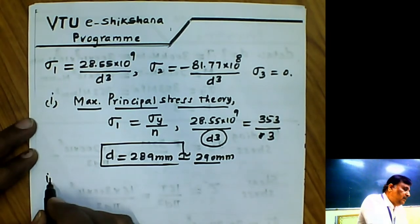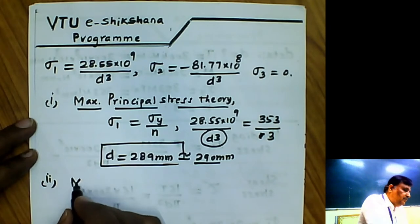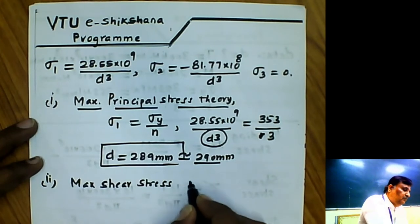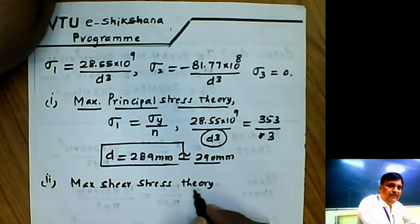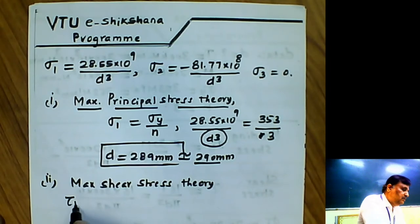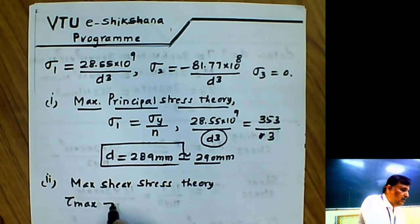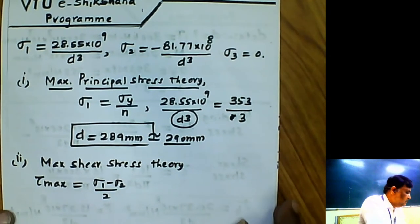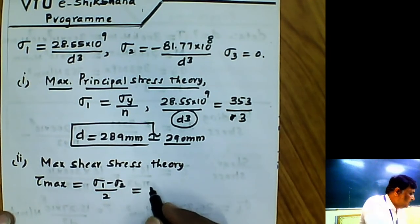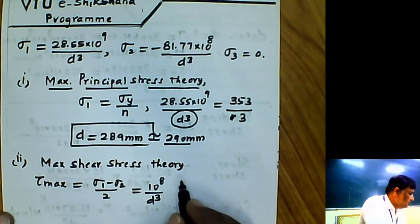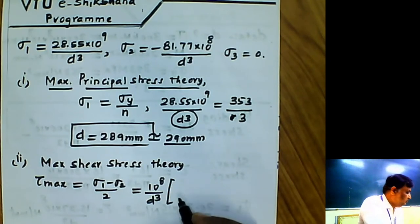Second, according to maximum shear stress theory, failure of the component occurs when the maximum shear stress reaches the shear stress at the yield point. First we have to find the maximum shear stress, which can be found by the difference in principal stresses: (σ₁ − σ₂) / 2, taking the values of σ₁ and σ₂.